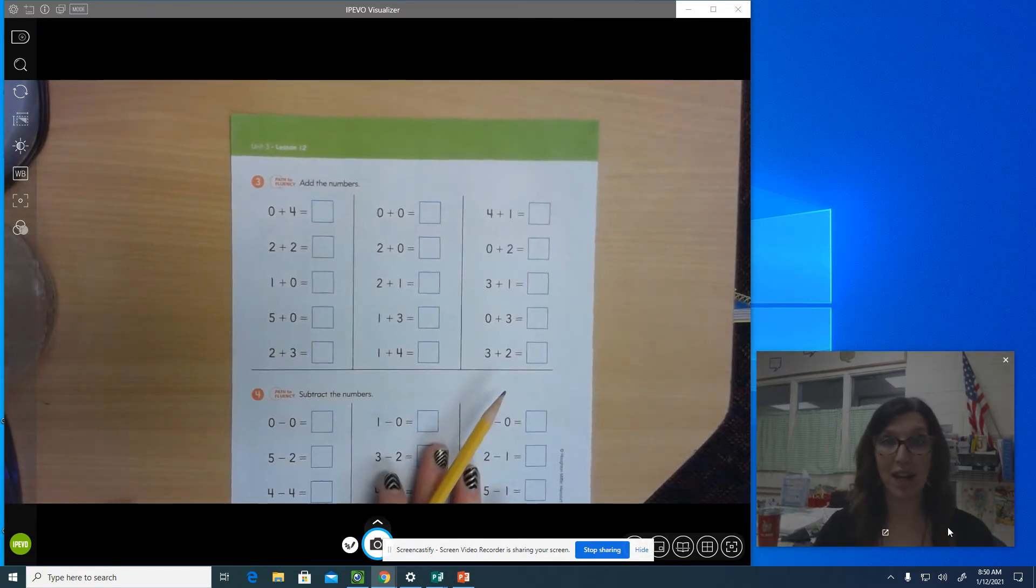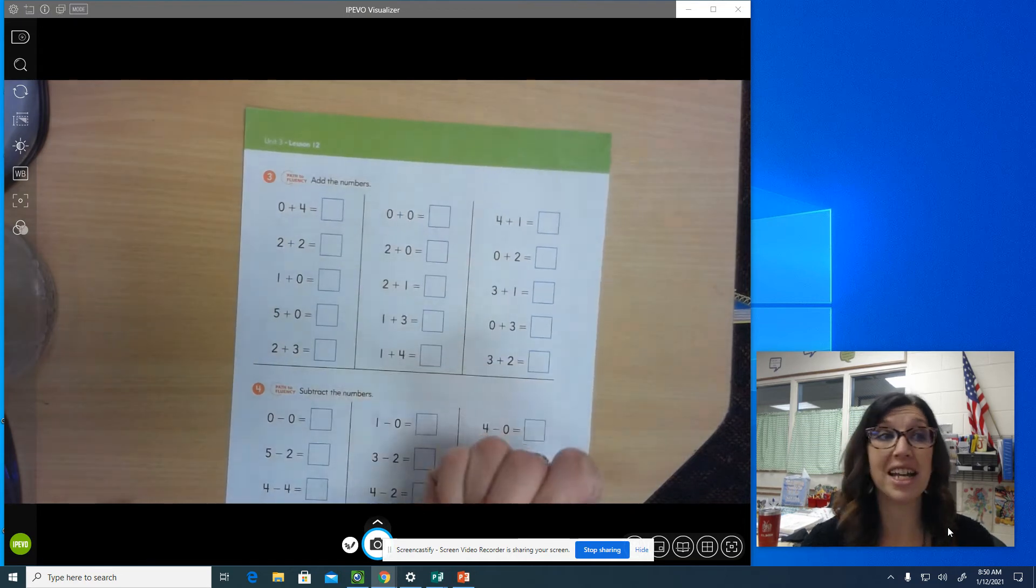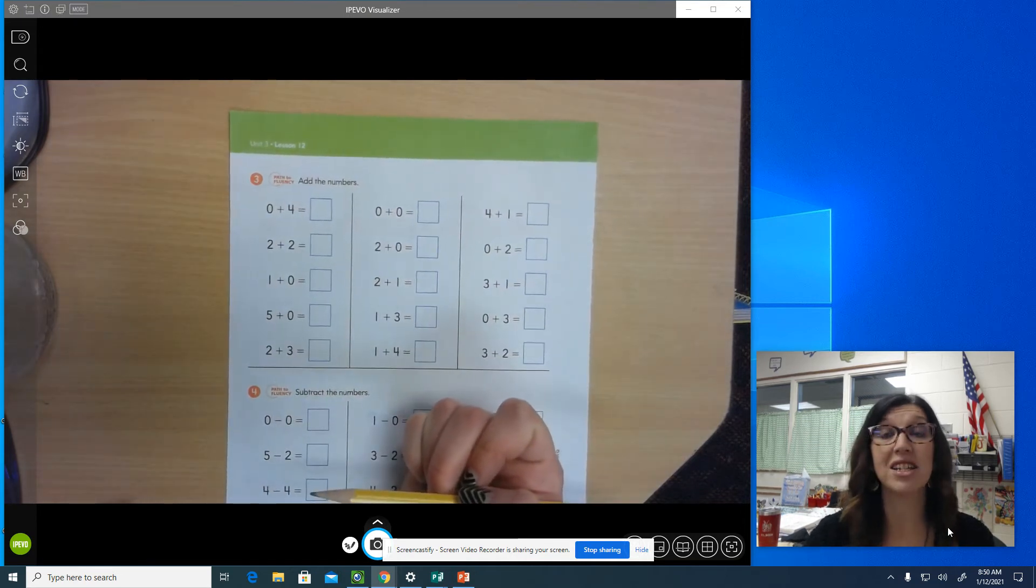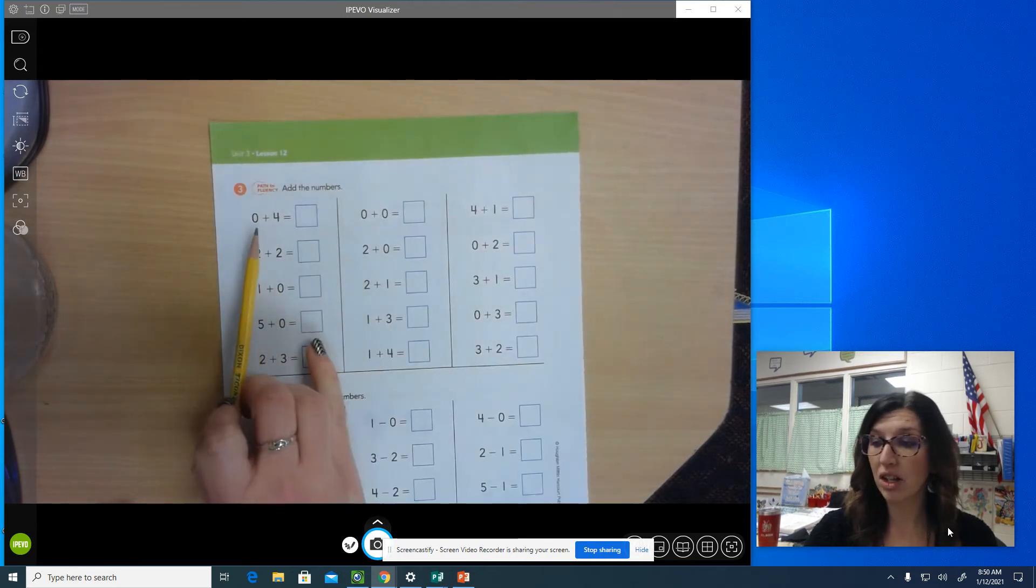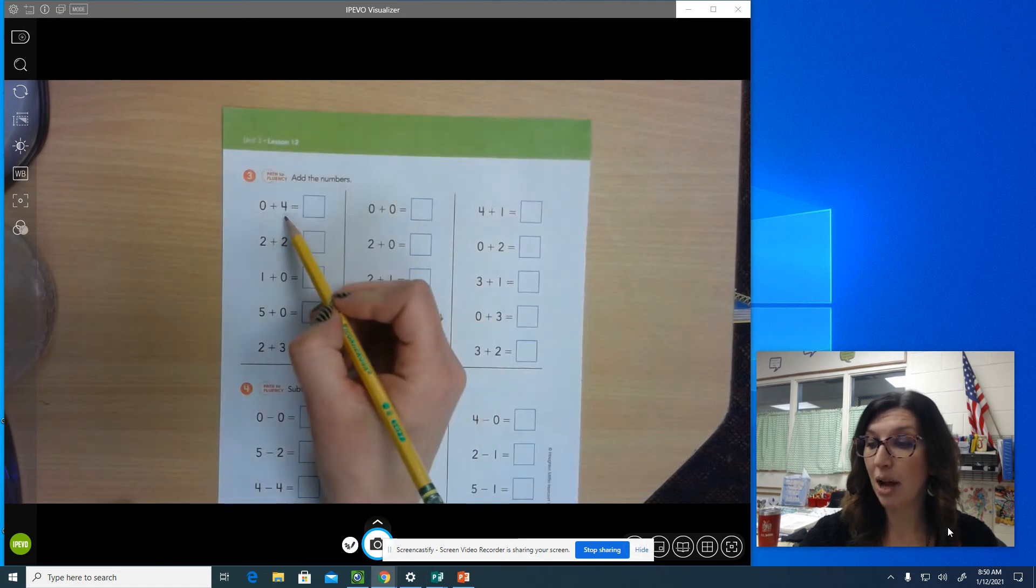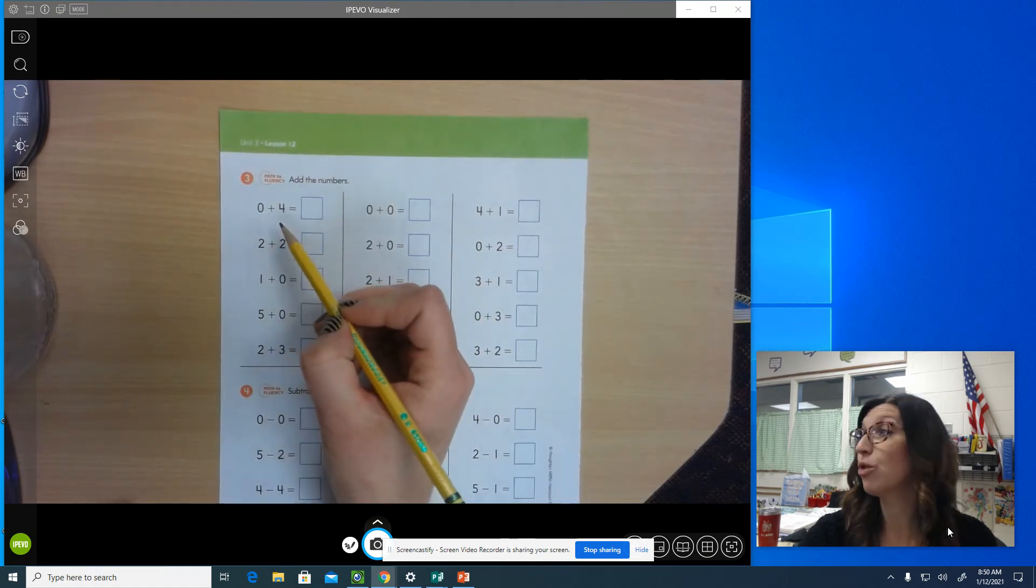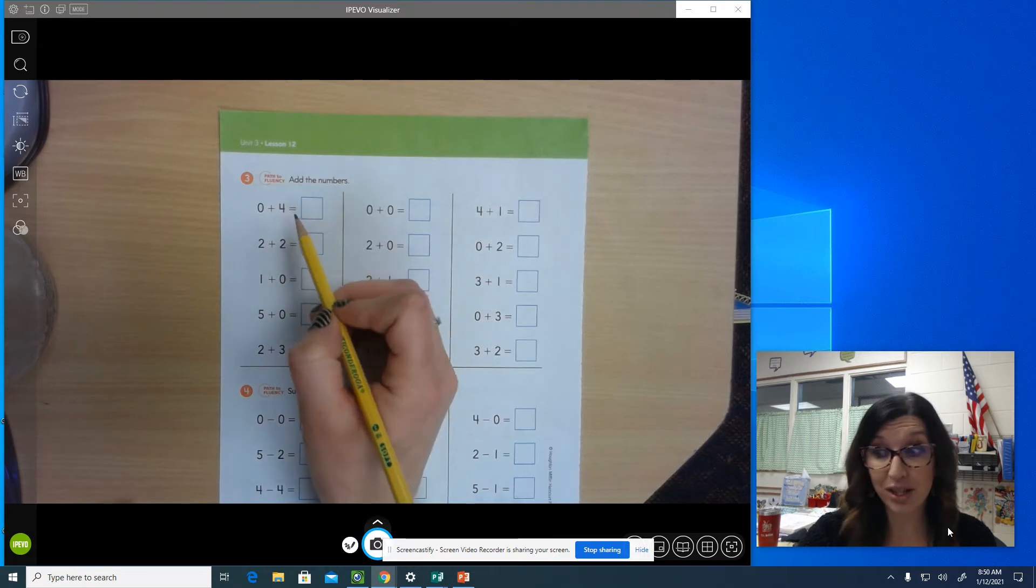When you do this shortcut, what you get to do is you find which number is larger or which one is the greater number. So we're going to look at these two numbers and I would love to know which one is greater. Everybody, which one? Four. Four is greater. So I'm going to circle the four.